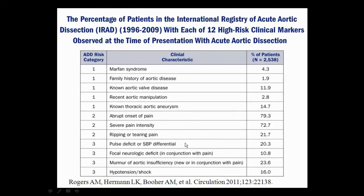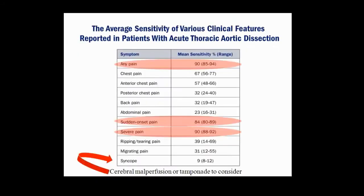About pulse differentials: from the IRAD registry, only about 15% of people with aortic dissection have a differential in their brachial artery blood pressures or pulses. So if you say 'they don't have a dissection because their pulses are equal,' you'd be missing 85% of cases. It's an important prognostic marker when present, but its absence doesn't rule out dissection.